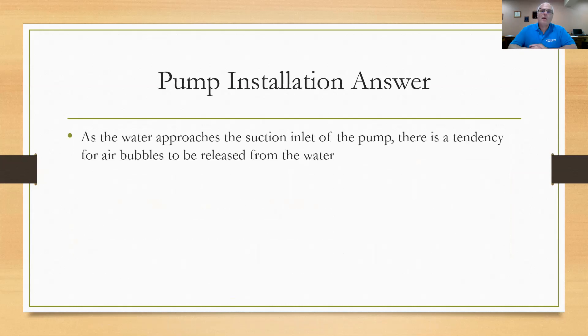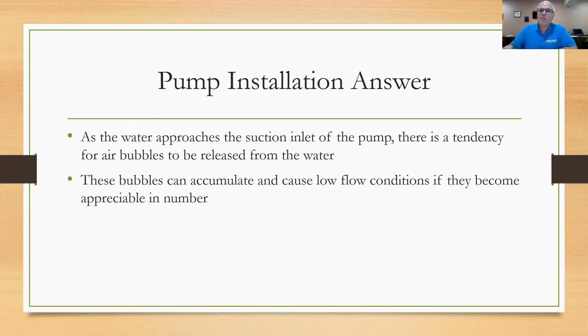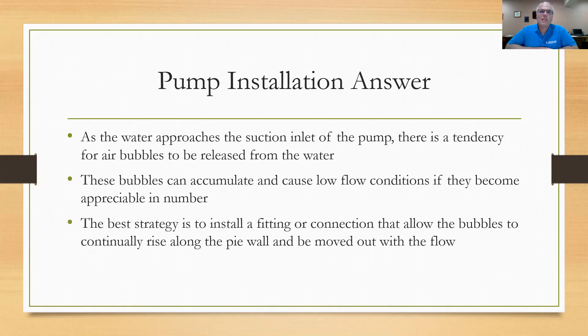So here's the answer on the next slide. Pump installation. As the water approaches the suction inlet of a pump, there's a tendency for air bubbles to be released from the water because you get this rush of water coming into the pump. You get a pressure differential. Any air that's in the water is going to tend to come out of bubbles out of solution. Those bubbles can accumulate if you're not careful. If you have the wrong pipe installation, you accumulate these air bubbles and you get these low flow conditions because they become appreciable in number. Now you're trying to suction air rather than just water. You want to avoid that. So the best strategy then is to install a fitting or a connection that allows the bubbles to continually rise as they approach the suction side of the pump along the pipe wall and be moved out with the flow. The answer then would be C, where the level, the bottom part of the spool piece coming in, the pipe goes up.